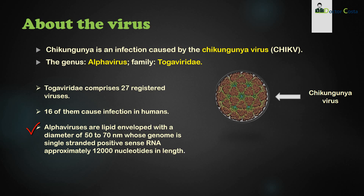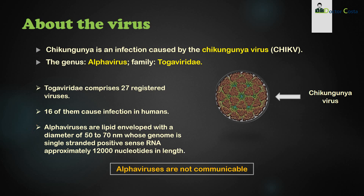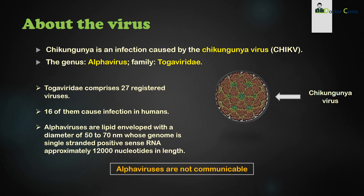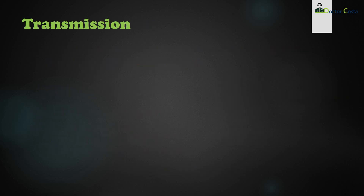Alphaviruses are lipid-enveloped with a diameter of 50 to 70 nanometers, whose genome is single-stranded positive-sense RNA approximately 12,000 nucleotides in length. Alphaviruses are not communicable — that means you will not get chikungunya infection if you stay or sleep with a chikungunya patient.